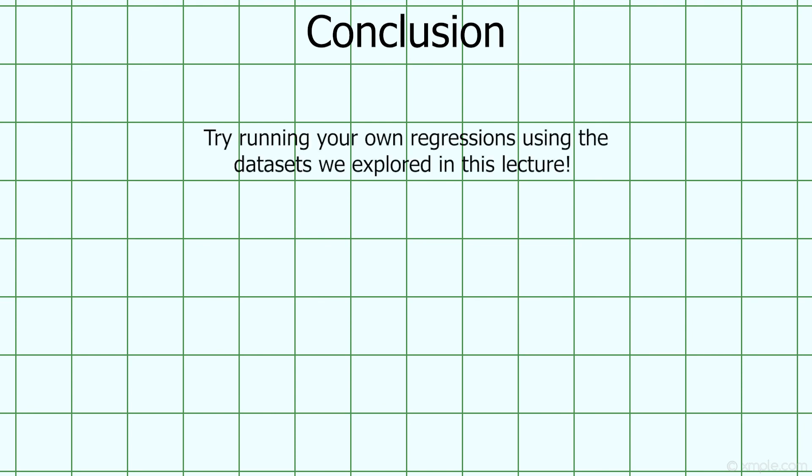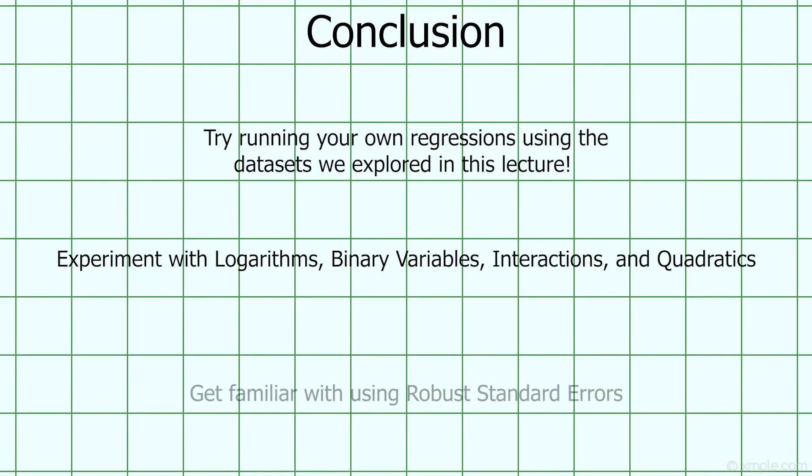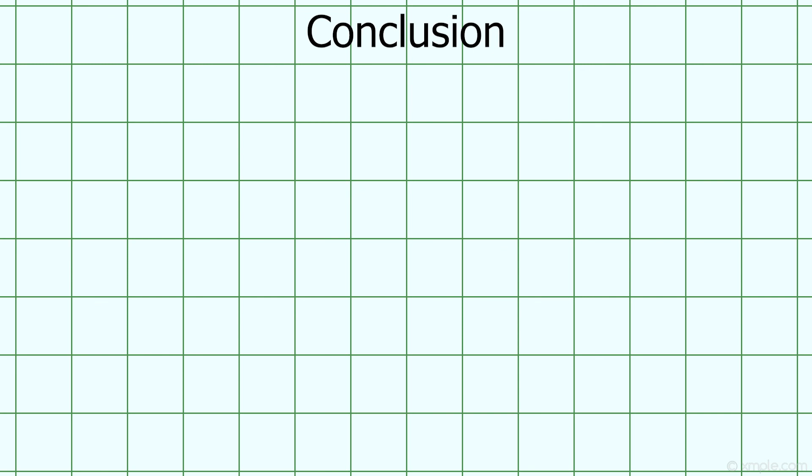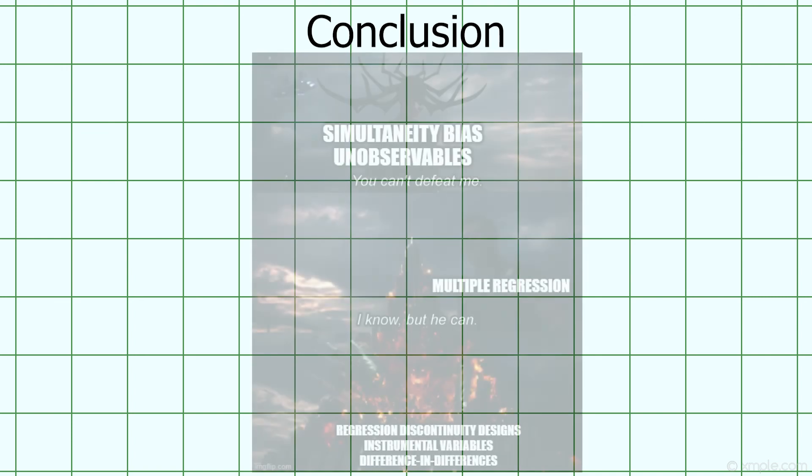To wrap things up, all of the data sets we used in this lecture will be made available for you to download and experiment with. So try running a few of your own regressions, experimenting with quadratics, logarithms, binary variables, or interactions. If you find something interesting or are having trouble, let me know in this week's discussion board. What's important to keep in mind is that these are tools for model fitting, not necessarily tools for causal inference. All the controls in the world can't rescue us from unobservable omitted variables or simultaneity bias muddying our results.